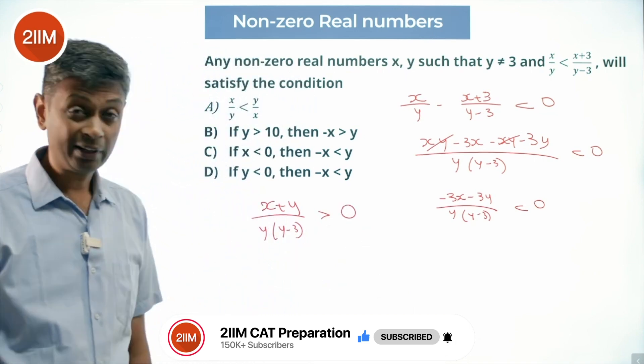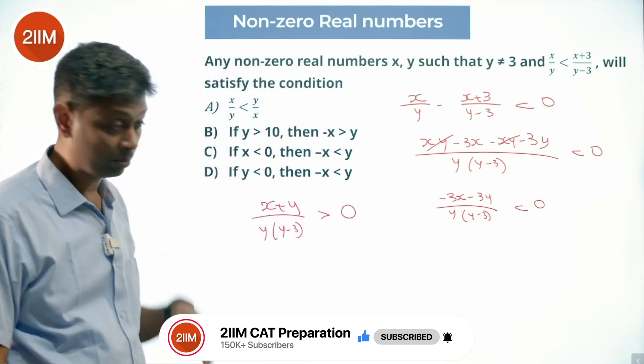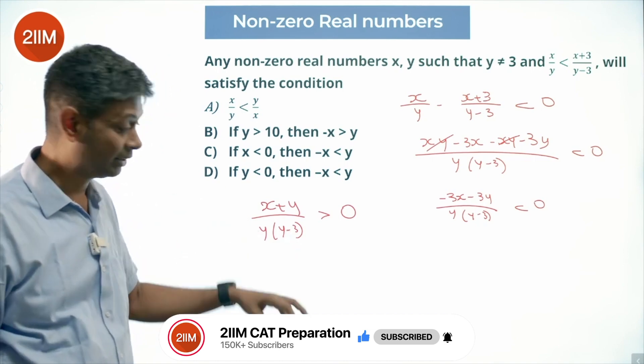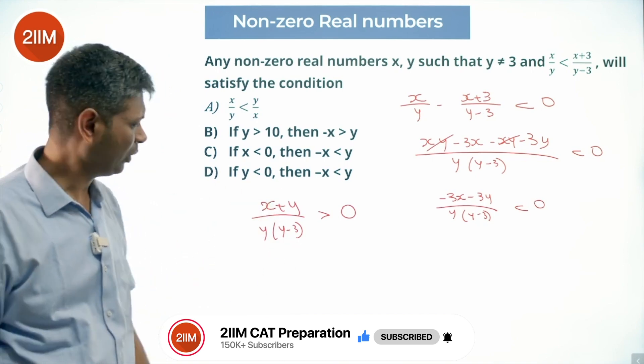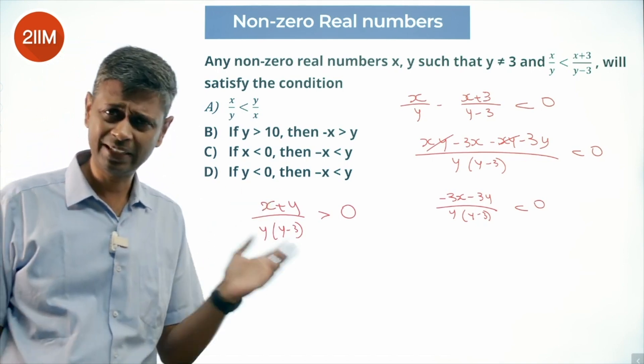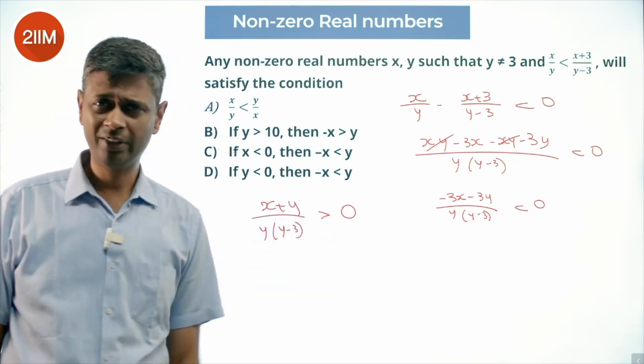(x+y)/y is greater than 0. Now I think about y(y-3) being greater than 0, this also being positive. y(y-3) when will be greater than 0? y is negative or y is greater than 3.